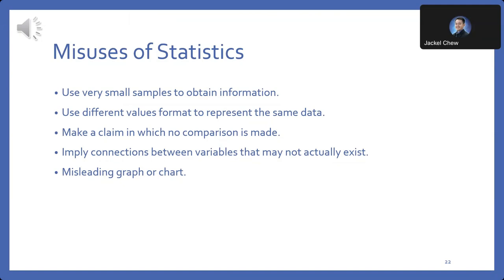Misuse 4: Imply connections between variables that may not exist. Correlation does not imply causation. Inferring connections between variables without sufficient evidence can lead to false conclusions. Misuse 5: Misleading graph or chart. Visual representations of data can be manipulated to exaggerate or downplay certain trends or comparisons, leading to misunderstandings or misinterpretations.